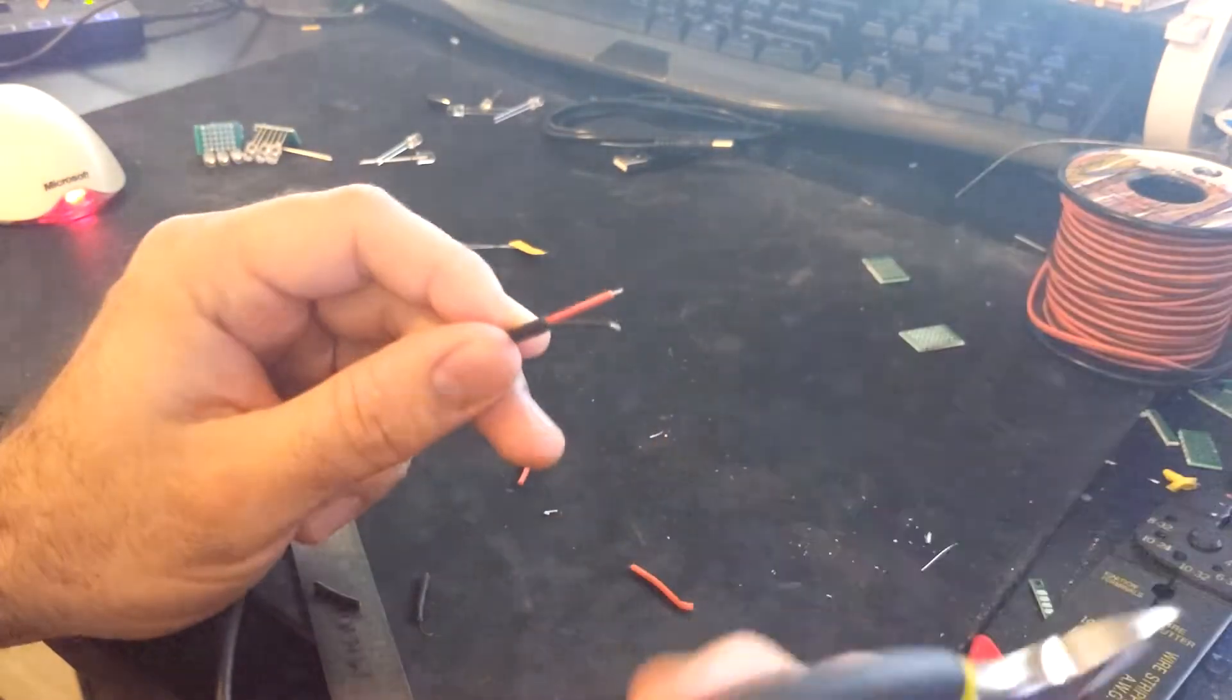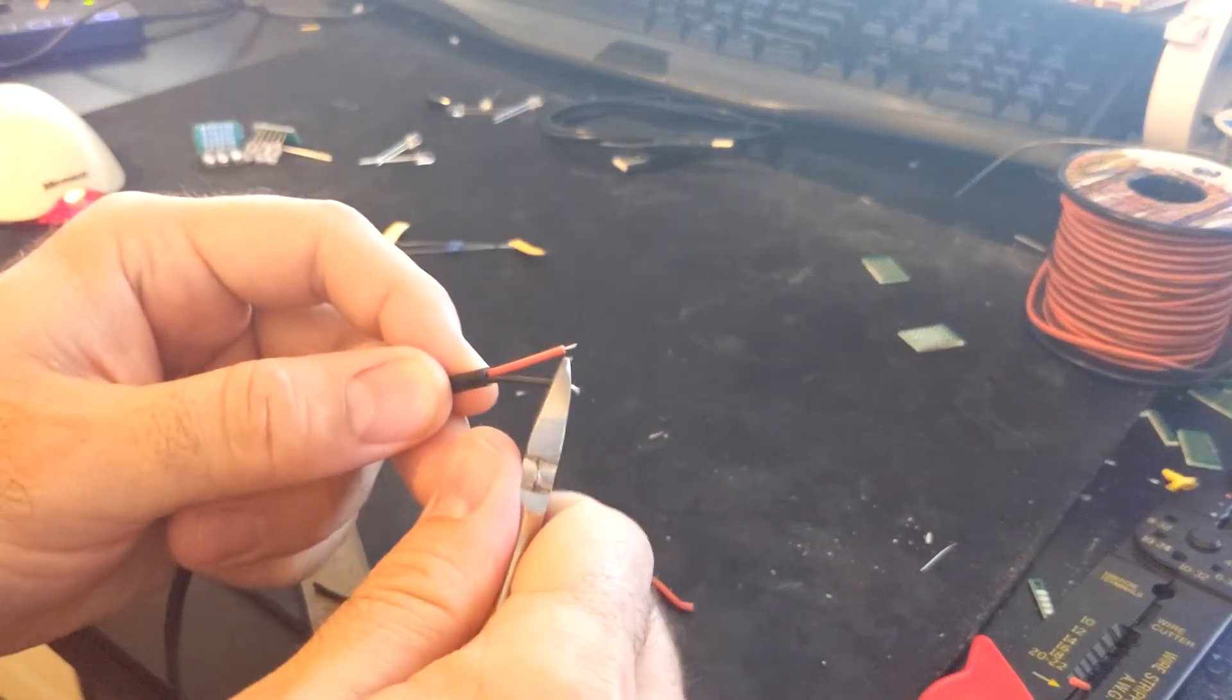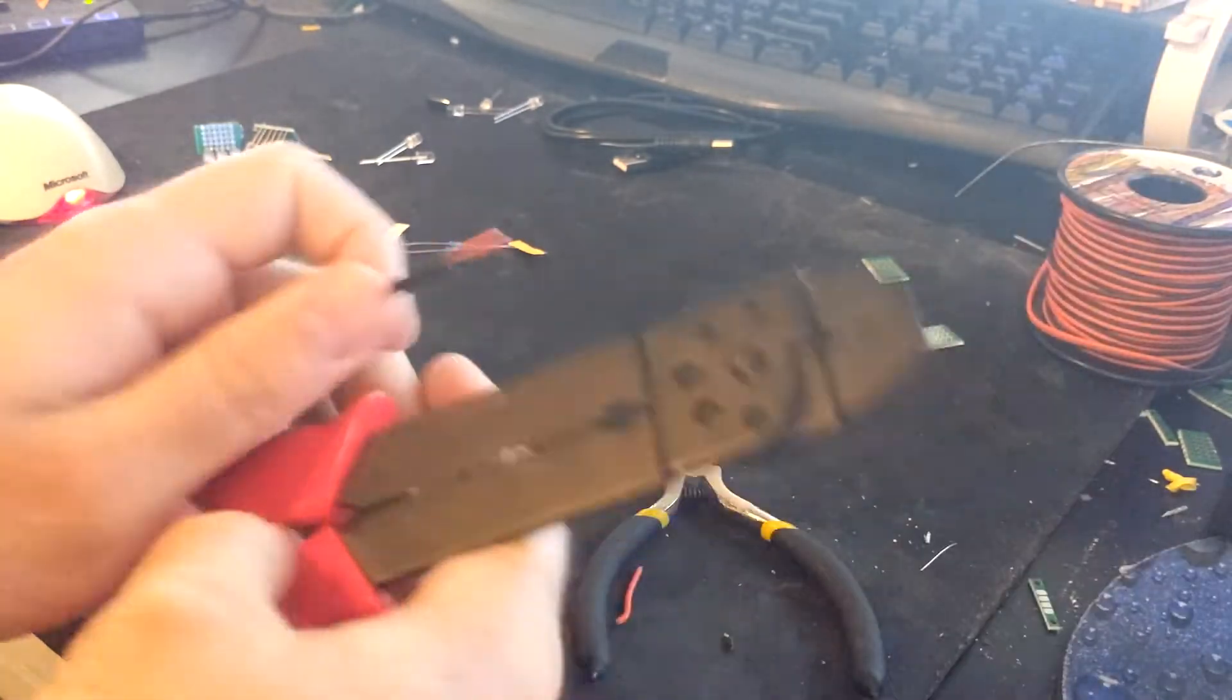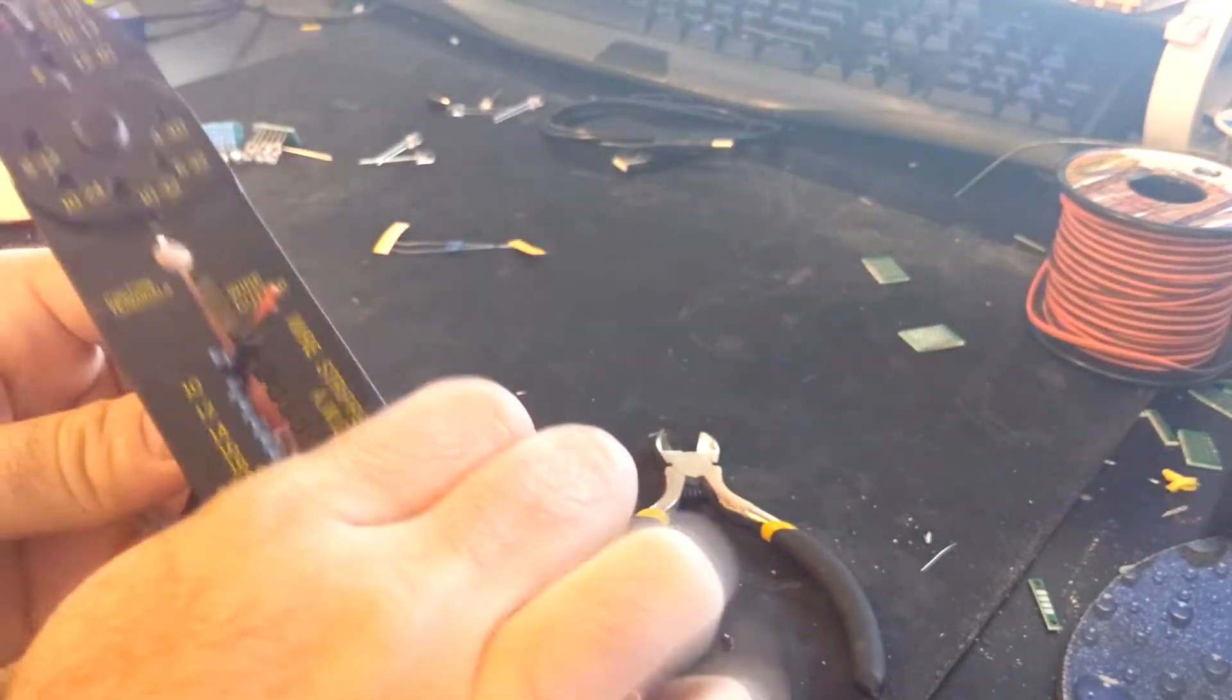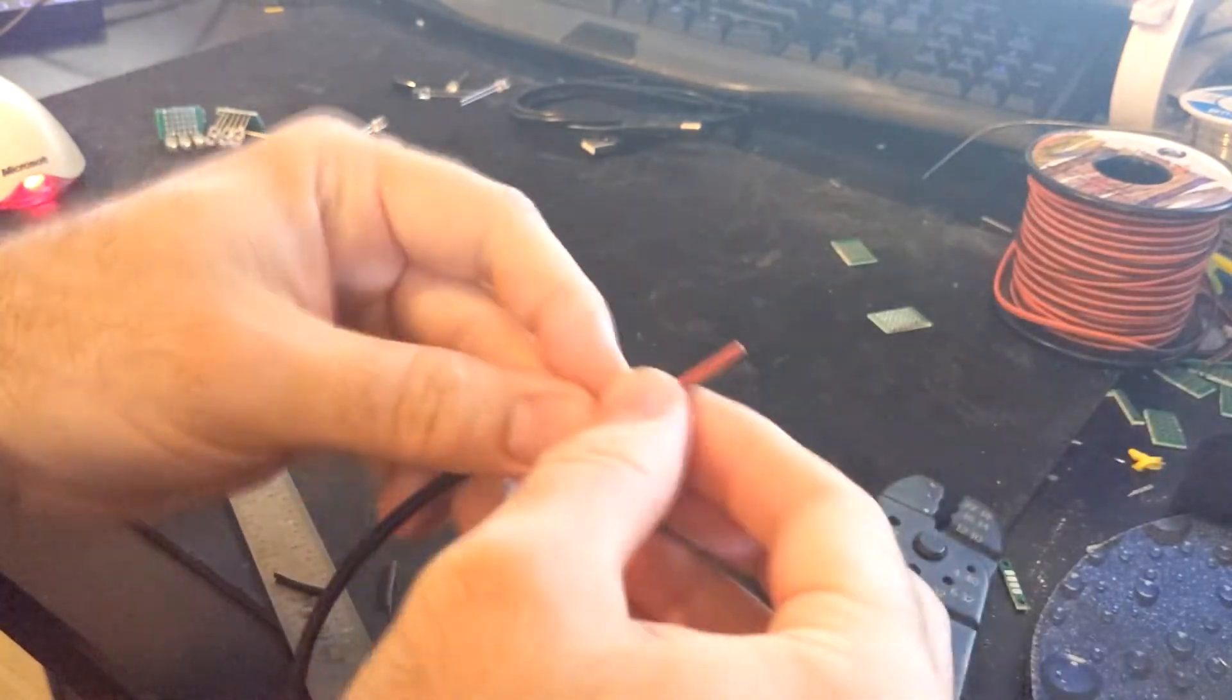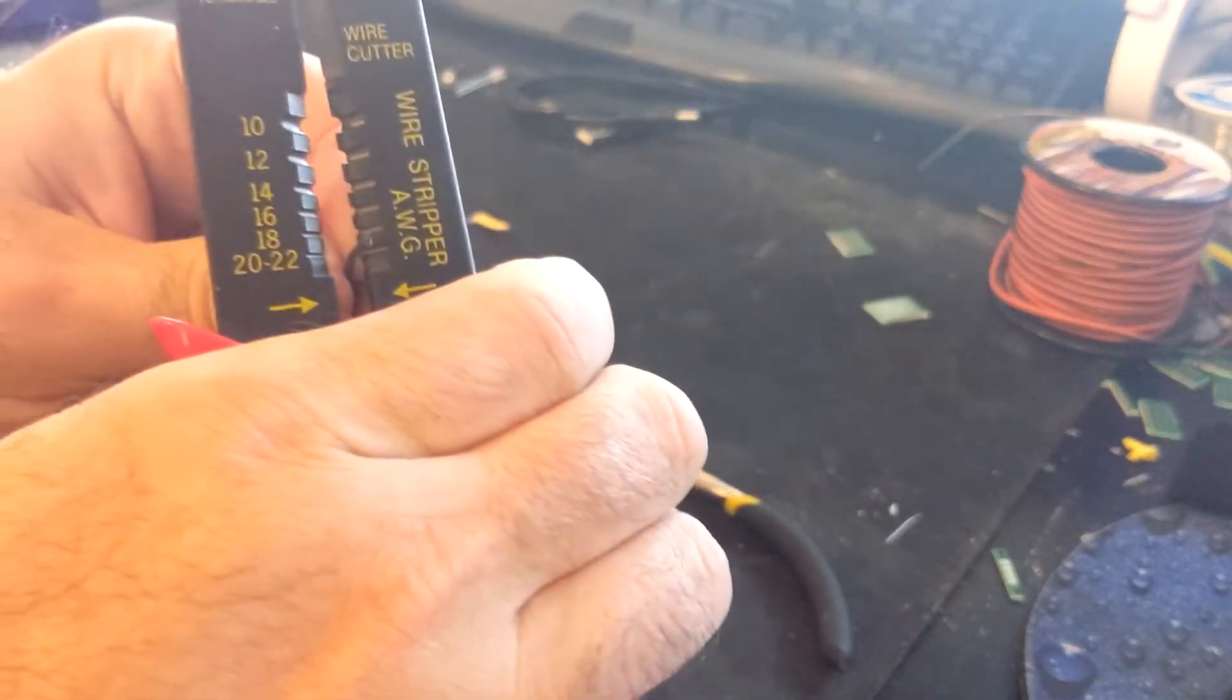Now for the DC power jack we will need to trim off the ends and remove some cable shielding. Trim off about an inch from each end.